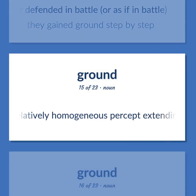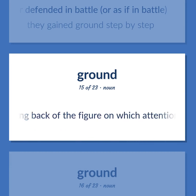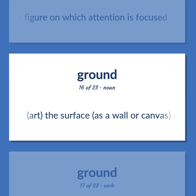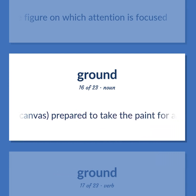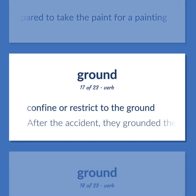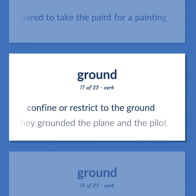A relatively homogeneous percept extending back of the figure on which attention is focused. Art: the surface, as a wall or canvas, prepared to take the paint for a painting. Confine or restrict to the ground. After the accident, they grounded the plane and the pilot.